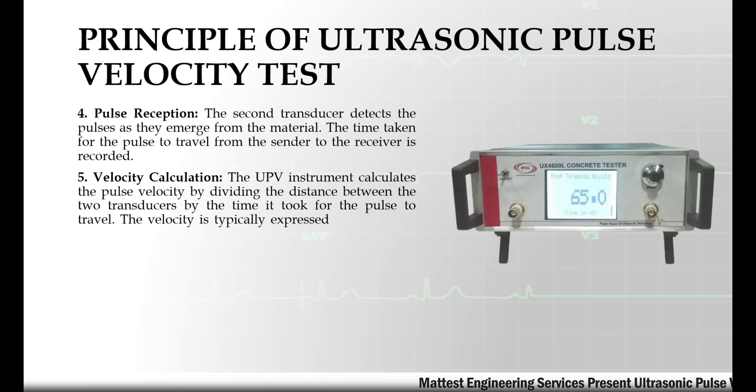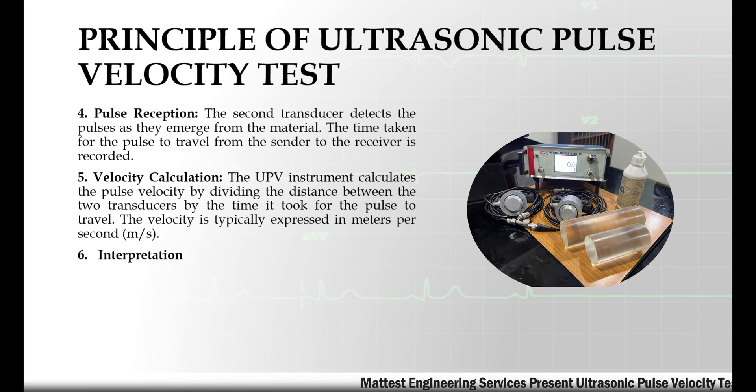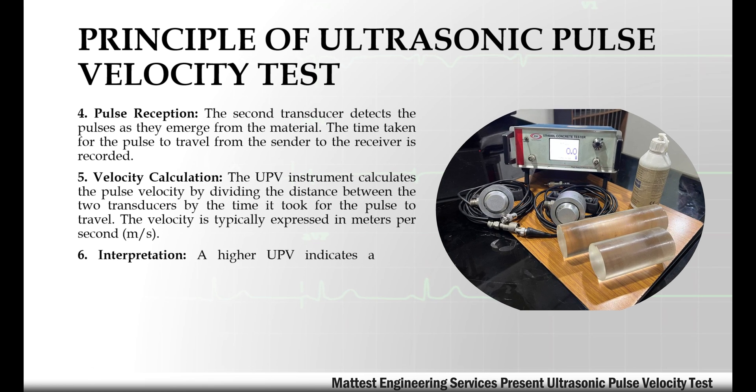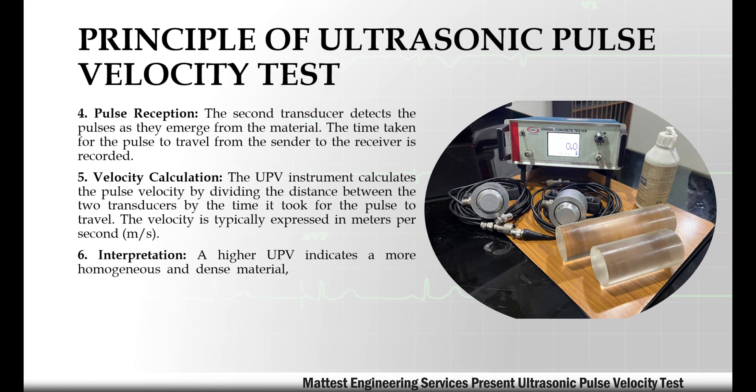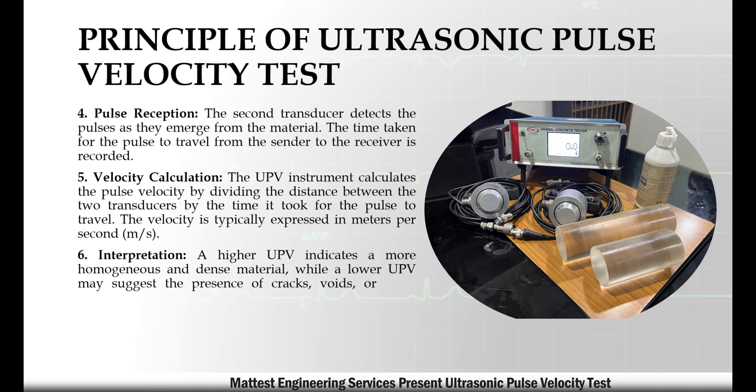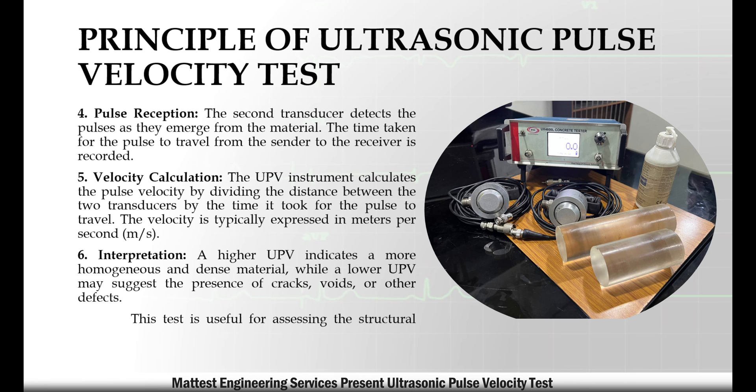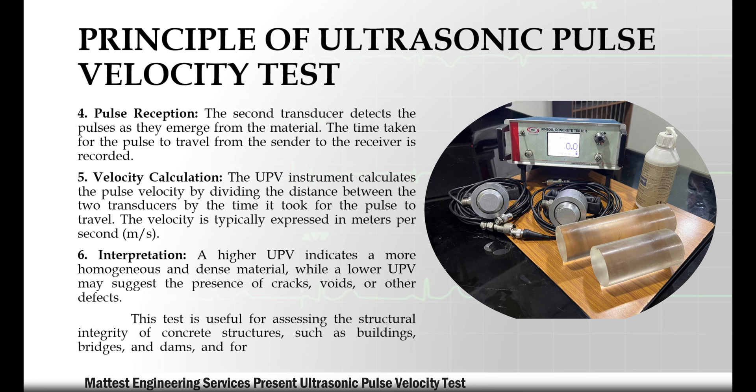The velocity is typically expressed in meters per second. Sixth, interpretation: a higher UPV indicates a more homogeneous and dense material, while a lower UPV may suggest the presence of cracks, voids, or other defects. This test is useful for assessing the structural integrity of concrete structures such as buildings, bridges, and dams, and for identifying areas that may require further investigation or repair.